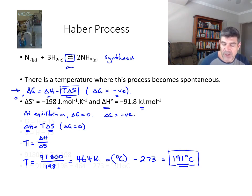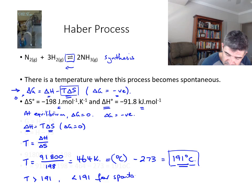Now, logically, we can work out whether or not the temperature needs to be greater than 191 or less than 191 for spontaneous reaction. So how would we do that? Well, when we go back to our original expression up here, our delta H value is a negative value.